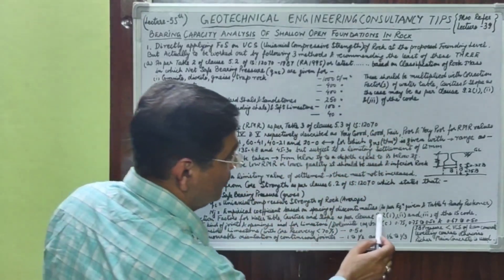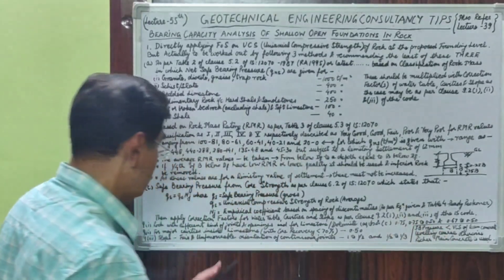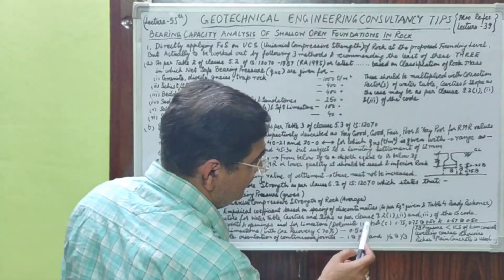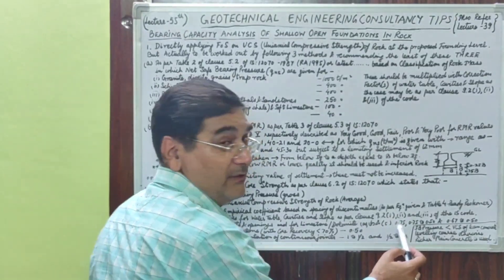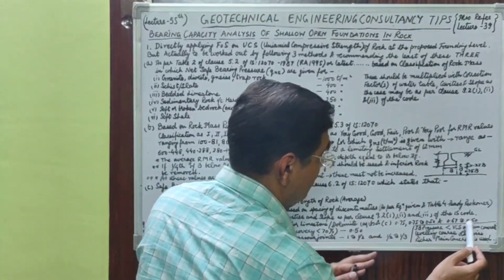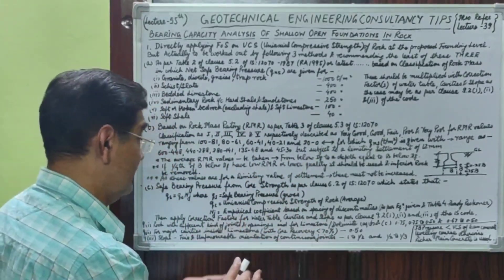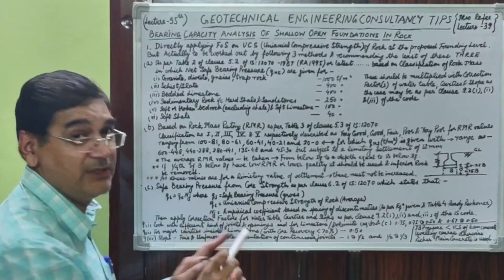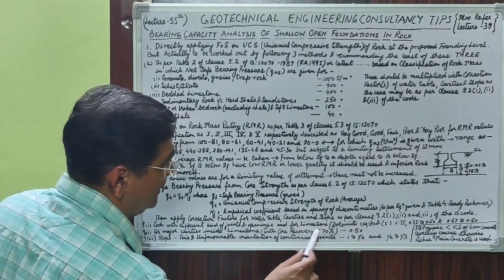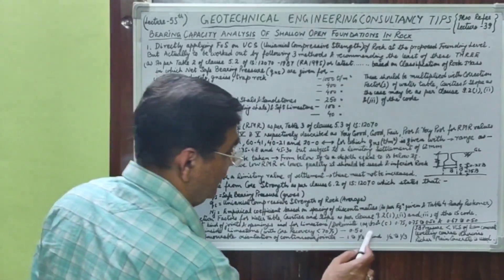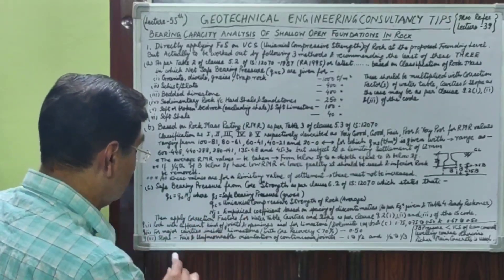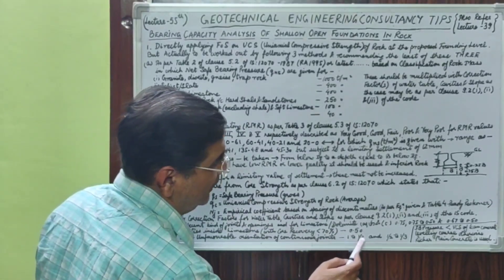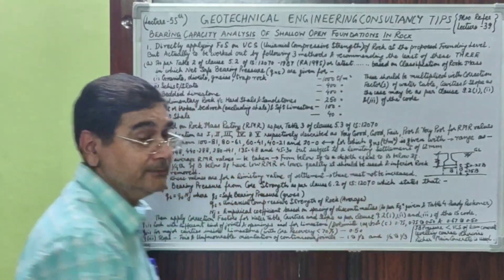After that, correction factors for water table, cavities, and slope are applied, just as in Method A. Clause 9.2.1, 9.2.2, and 9.3 of this code define correction factors for rock with different kinds of joints and openings. For limestone and dolomite, the respective correction factors A, B, C are 0.75, 0.75, 0.5, and 0.67 to 0.5. For major cavities inside limestone with core recovery less than 70%, a correction factor of 0.5 is applied.